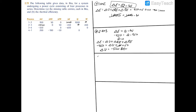Now for process 3 to 4. We have delta E equals Q minus W. Delta E is negative 600, and W is 0, so Q is equal to negative 600 BTU.